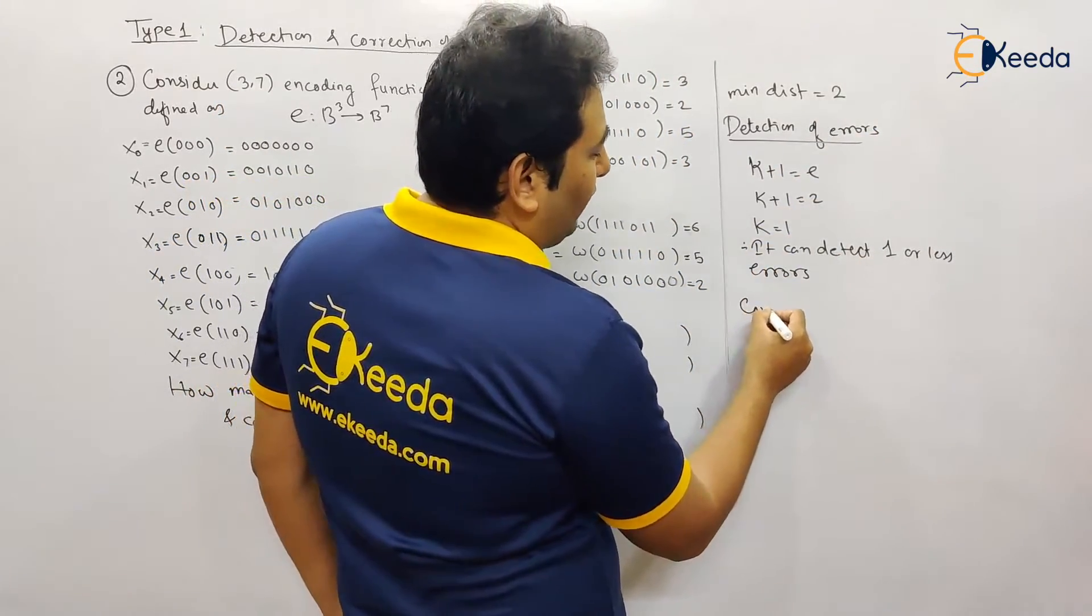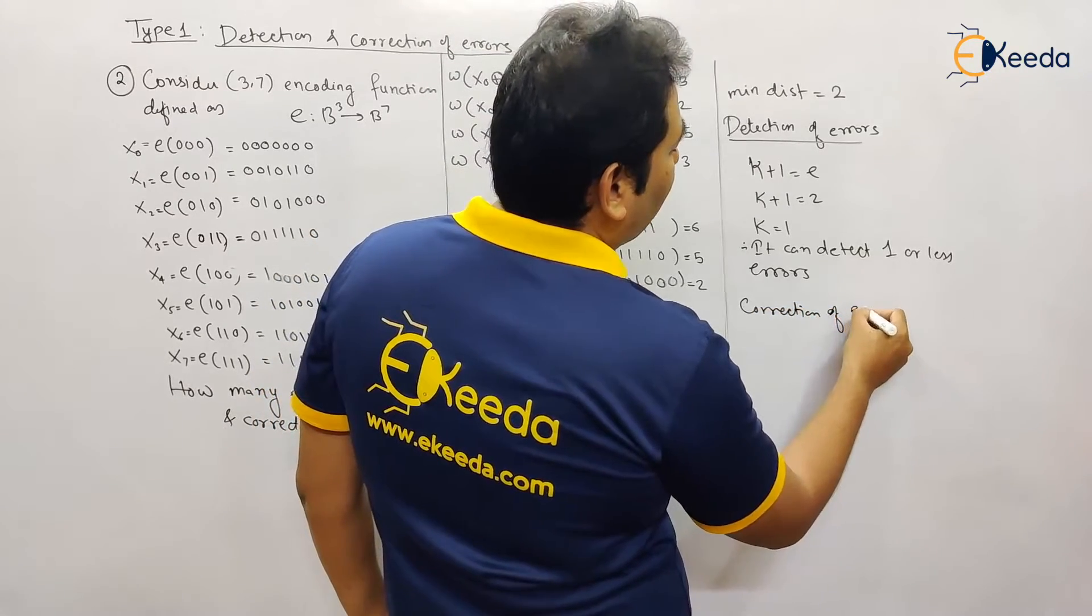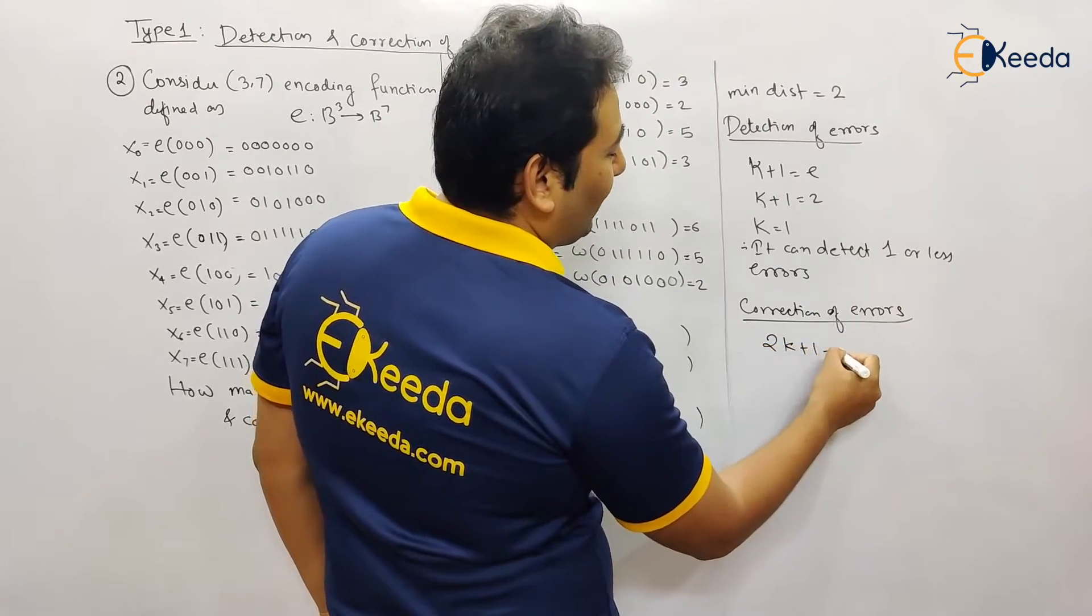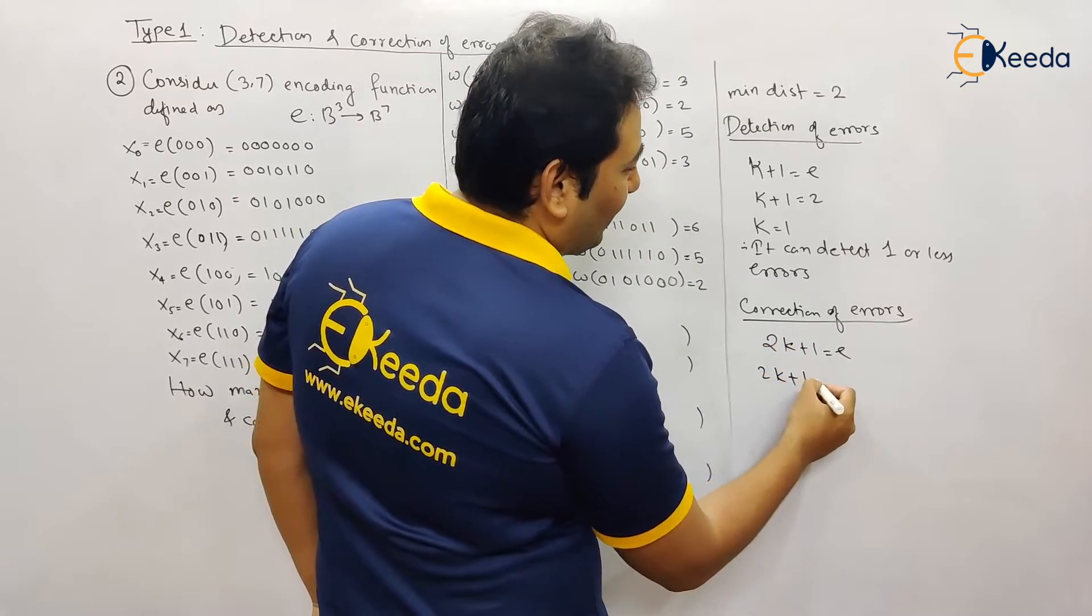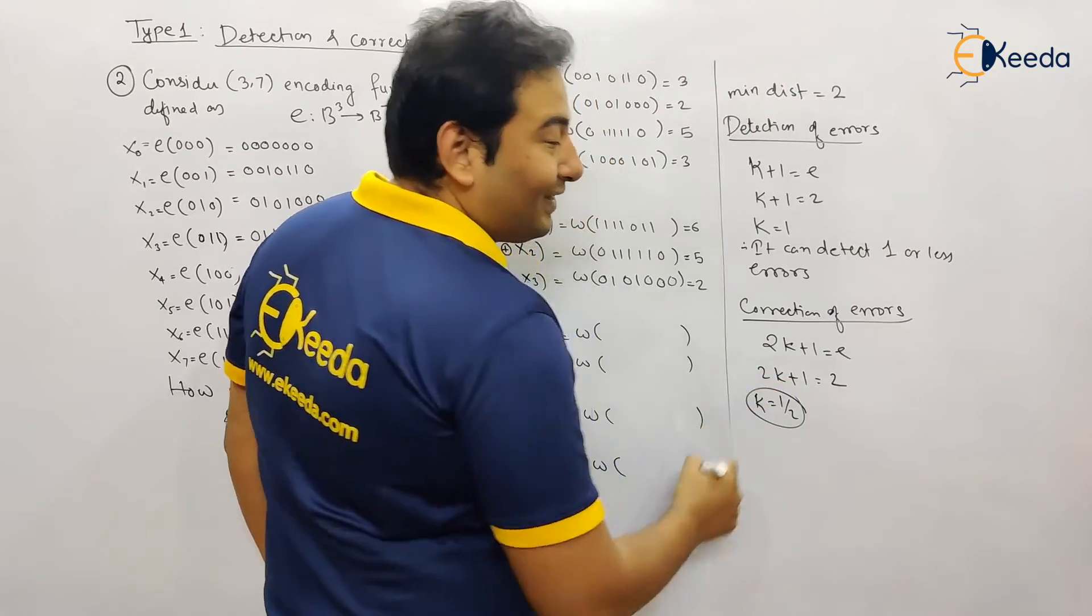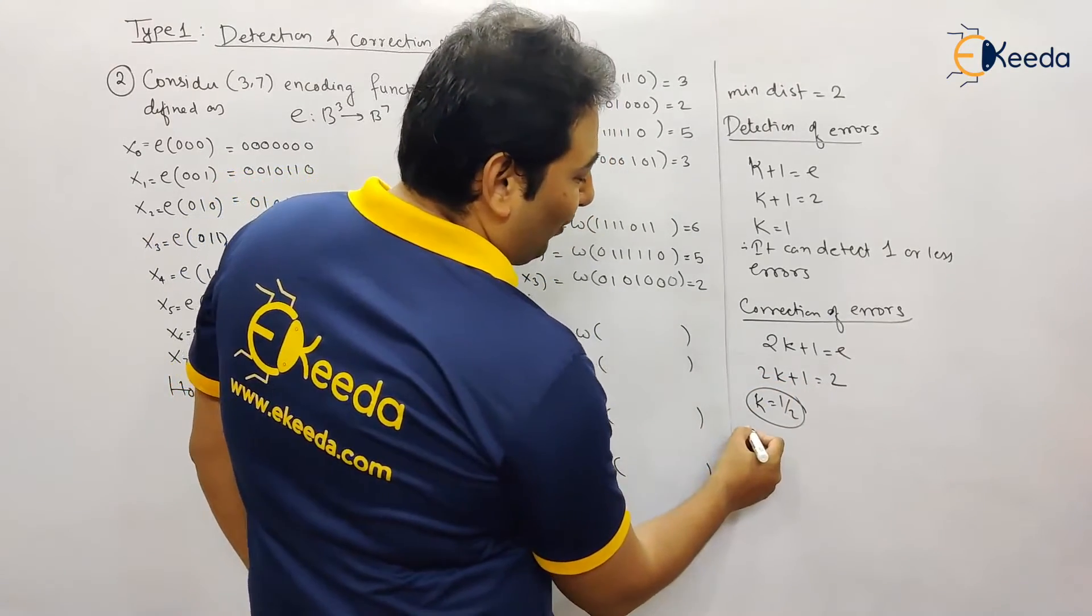Next is correction of errors. For correction of errors we know this minimum distance is equal to 2k plus 1. So 2k plus 1 equals the minimum distance, so k will be equal to half. How many errors can it correct? Zero errors.